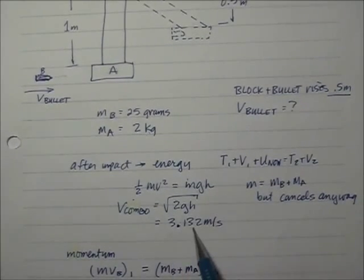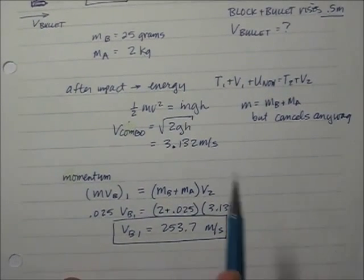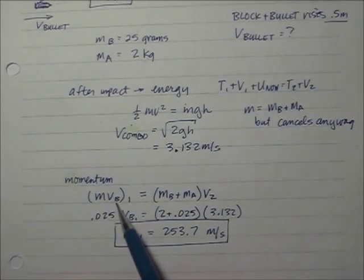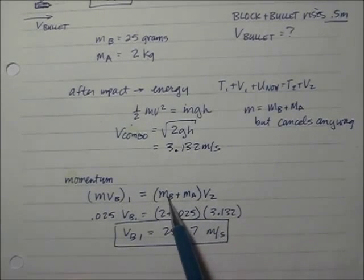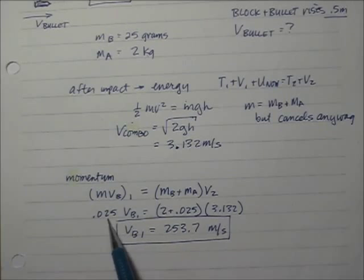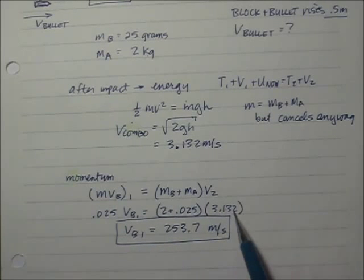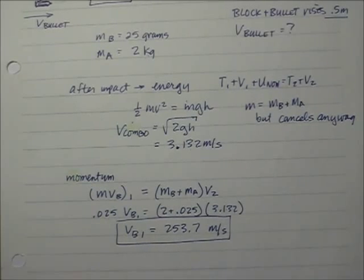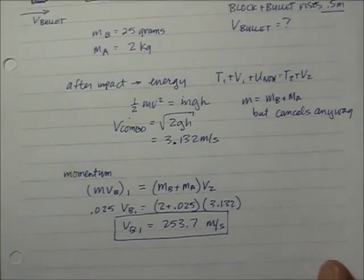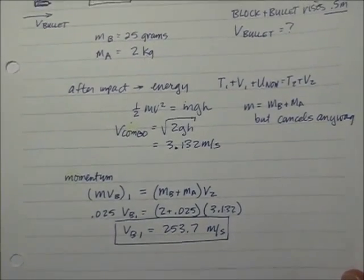Taking the combination velocity of the block and bullet together, we go back to a momentum equation: the beginning momentum of the system, which is just the bullet, equals the ending momentum, which is the block and bullet together. The mass of the bullet (25 grams) times its unknown velocity equals the mass of the bullet and block together times 3.132, giving a bullet velocity of 253.7 meters per second. That's the classic and appropriate way to solve a bullet velocity problem.